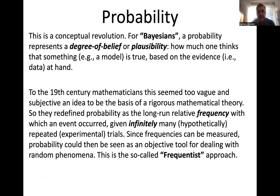For Bayesian statisticians, probability represents a degree of belief or plausibility: how much do you think the model is true based on the evidence in the data at hand? But in the 19th century, mathematicians thought this was too vague and too personal a statement, because it talked about degree of belief.